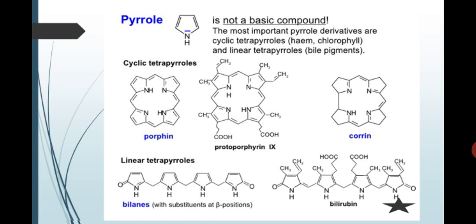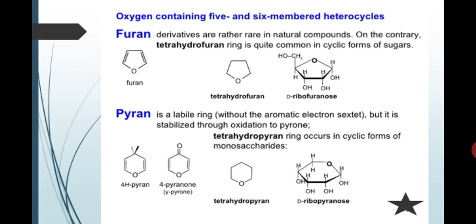Pyridine is a basic compound. The most important pyridine and some examples. And next: linear tetrapyrroles and their examples.